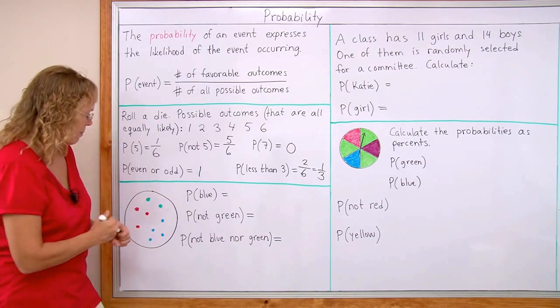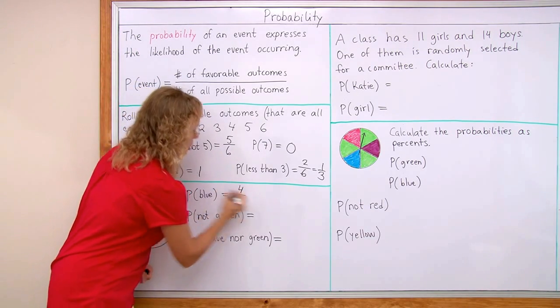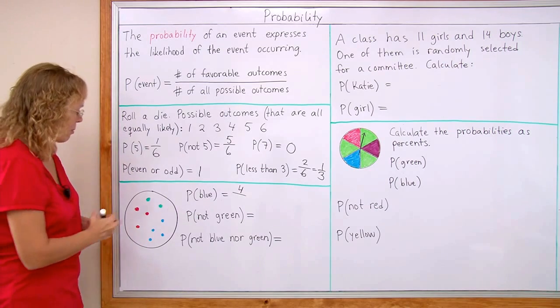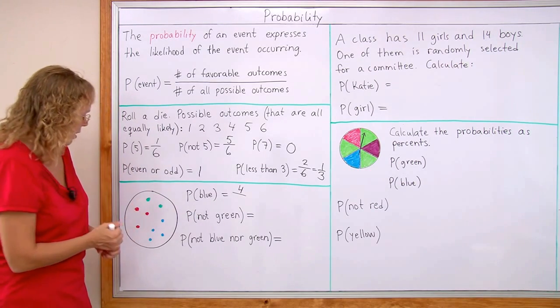So we count how many favorable outcomes there are. Which is this marble, this marble, this and this. That's four. And then how many possible outcomes are there in total? Or how many marbles there are in total? There are nine.